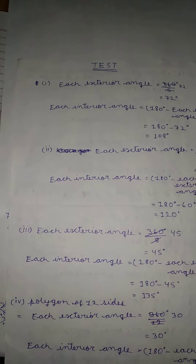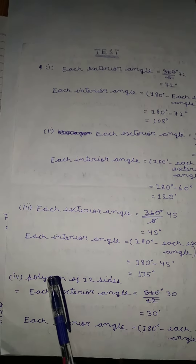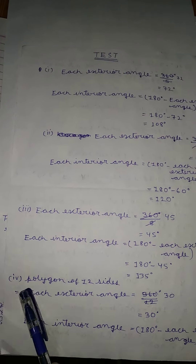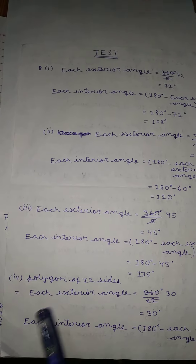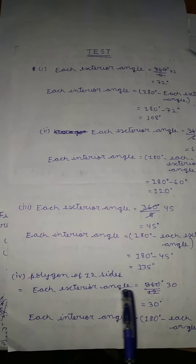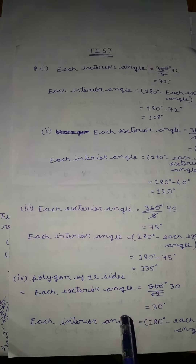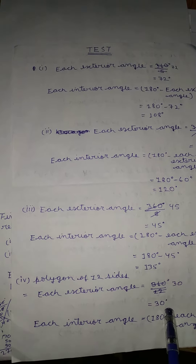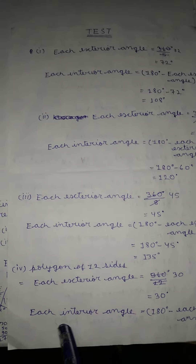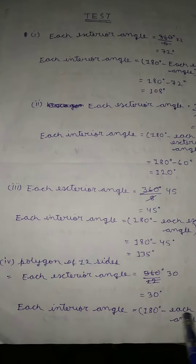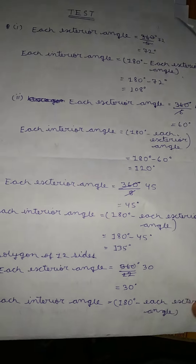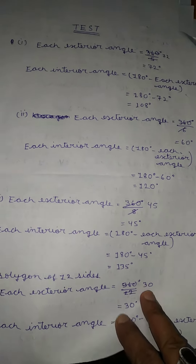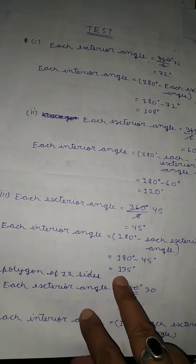For question four, a polygon of 12 sides: each exterior angle is equal to 360 divided by 12, which equals 30 degrees. Each interior angle is equal to 180 minus the exterior angle — that is, 180 minus 30 degrees — which equals 150 degrees.